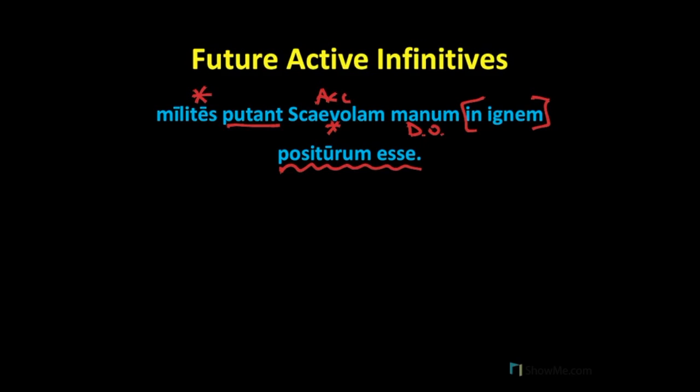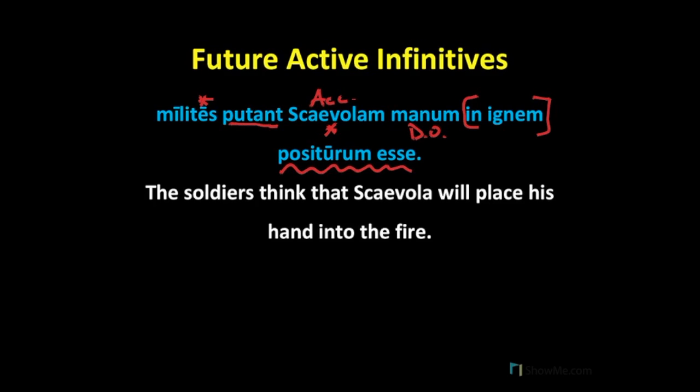We'll translate this sentence as: 'The soldiers think' — milites putant — 'that Scaevola' — using the English keyword 'that' — 'will place' — positurum esse — 'his hand into the fire.'